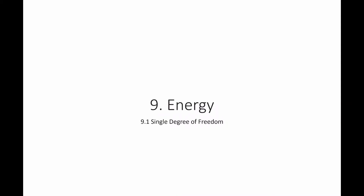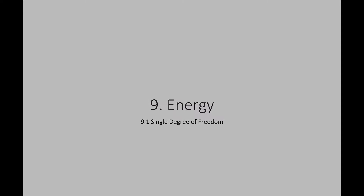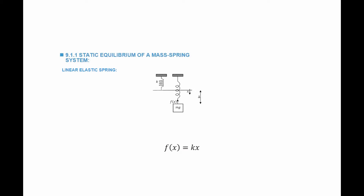In this video we're going to study the concept of mechanical energy applied to a mechanical system composed of a single degree of freedom. The single degree of freedom system is made out of a mass and a spring. The weight is acting downwards and the force in the spring is acting upwards. The force in the spring is directly proportional to the extension; the constant of proportionality is k, called the stiffness of the spring.